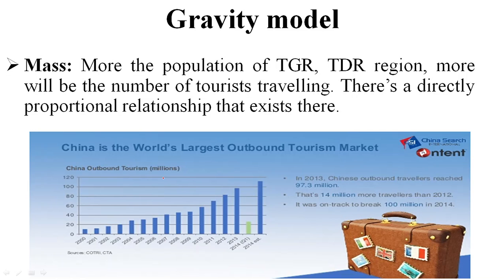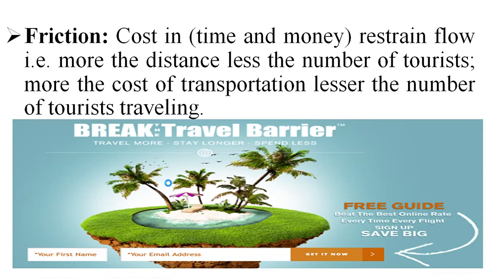In the gravity model, mass refers to the number of people — the population of either the origin or the destination. So tourism is directly proportional to mass: more people means more travel. That is the basic idea behind the gravitation model.